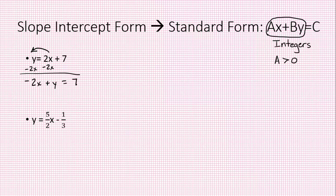I just need that 2x to be positive. So let's multiply everything by negative 1. And that just changes all the signs. There it is. Standard form.